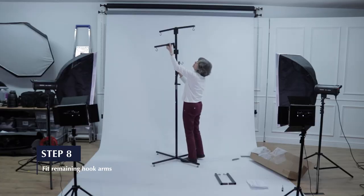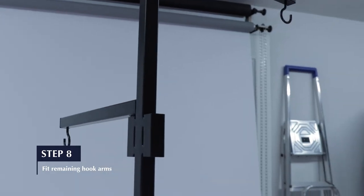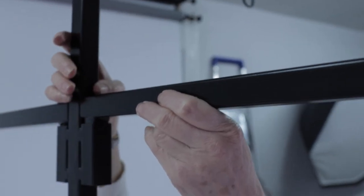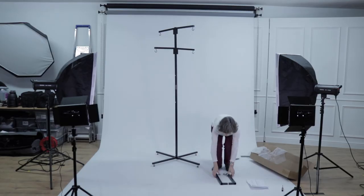Step 8. Slot the remaining four hook arms E into the sockets on upper column D and extension column X.